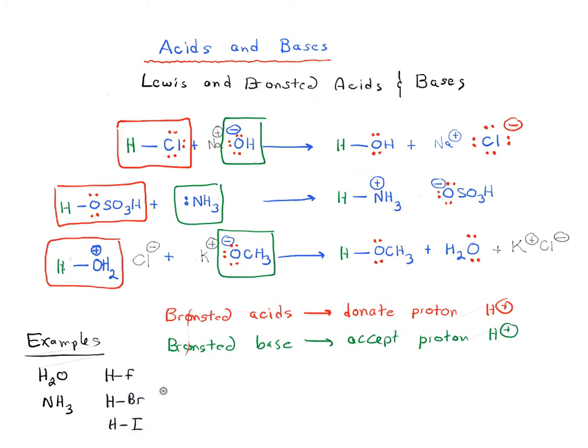HI. These could all donate protons, but even species like alkanes, HCH3. It's not a very good Bronsted acid. And we'll talk about what makes something a strong and a weak acid later on in the series. But anything which has a proton can act as a Bronsted acid.